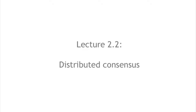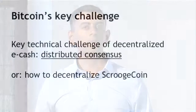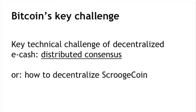Let's talk at a more technical level about Bitcoin and decentralization. A key word that's going to come up again and again is consensus — specifically distributed consensus. At a technical level, the key challenge you have to solve to build a distributed e-cash system is called distributed consensus. This is a class of protocols that's been studied for decades in the computer science literature. Intuitively, you can think of our goal as being to decentralize Scroogecoin, the hypothetical currency we saw in the first lecture.